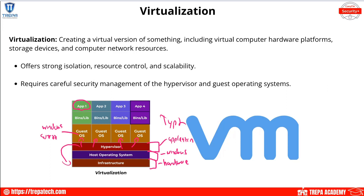A Type 1 hypervisor removes the host OS layer entirely. Instead, you just have the bare metal server with the hypervisor installed directly on top of it — something like ESXi.